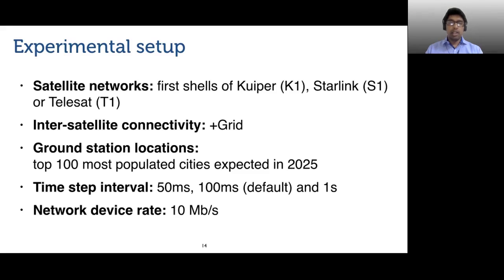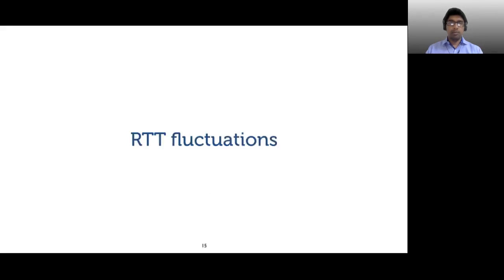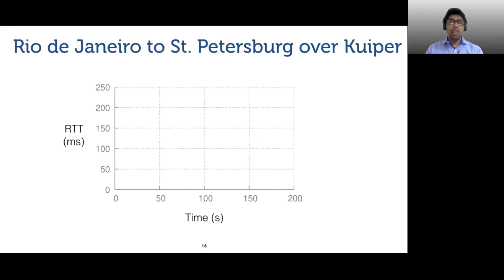Let us now look at some of our results. To start with, let us look at how the end-to-end RTTs vary over time. These experiments use the Kuiper K1 shell, which consists of 34 orbits, 34 satellites per orbit, and operate at a height of 630 kilometers and an inclination of 51.9 degrees.